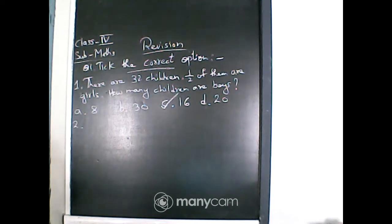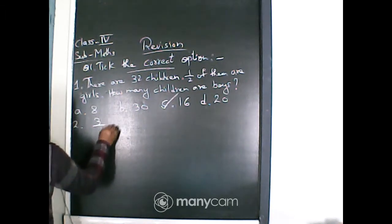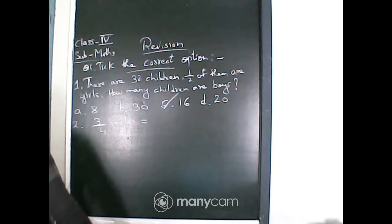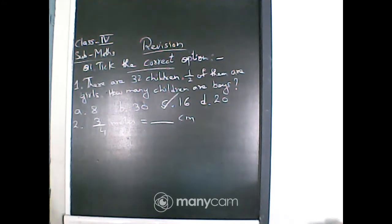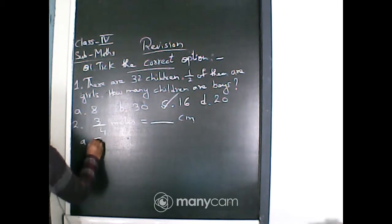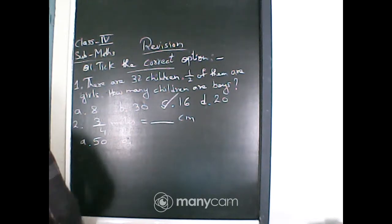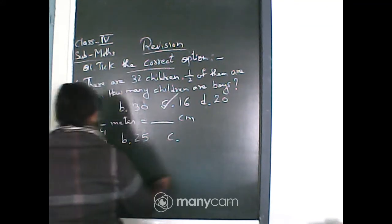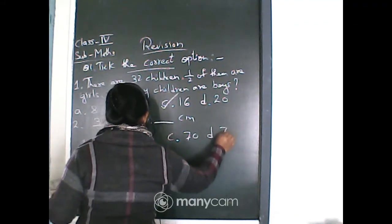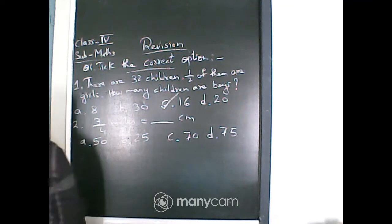Now one more question from your Math Magic book. 3/4 metre equals dash centimetres. You have to find out that 3/4 of a metre equals how many centimetres. The options are 50 cm, 25 cm, 70 cm or 75 cm. You have to find it out.